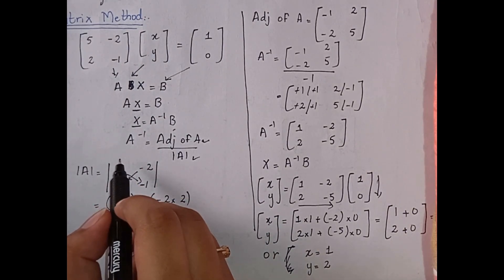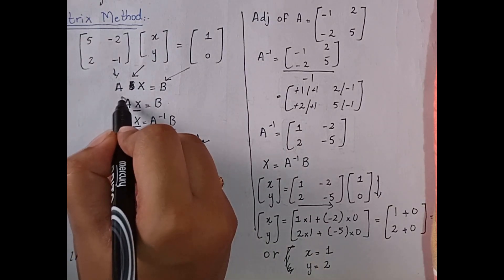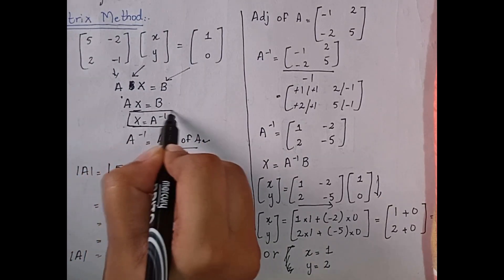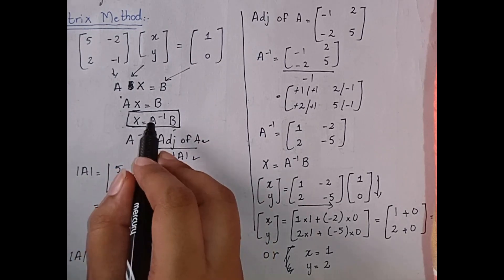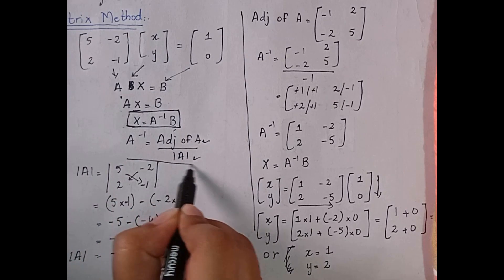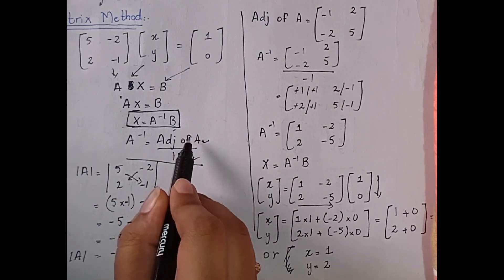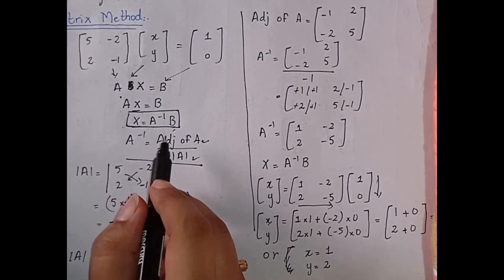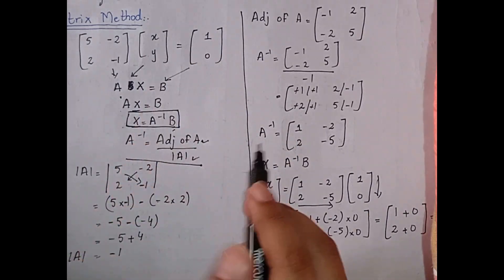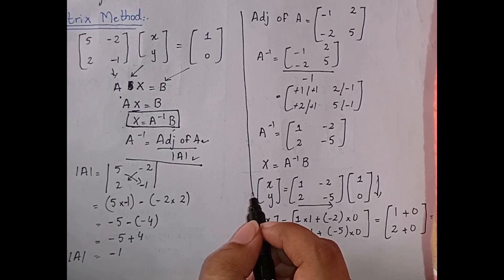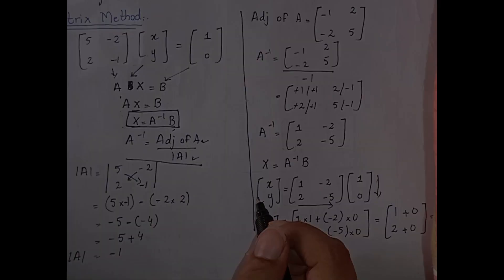To summarize, we need to remember two important formulas. First, x = A inverse times B. Second, A inverse = adjoint of A divided by the determinant of A. These are the two most important formulas for this matrix method. If you have any confusion, please ask me in the comment box. Have a good day. Allah Hafiz.